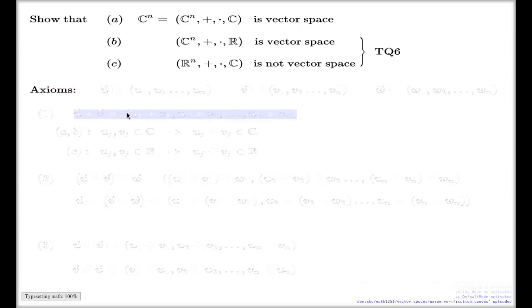In my notations, I will use the notation U for this n-tuple, I will use the notation V for this n-tuple, and I will use the notation W for the n-tuple like this.